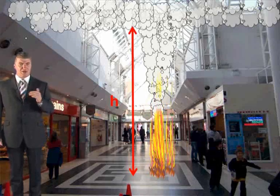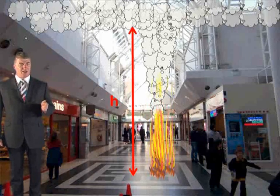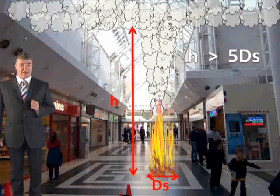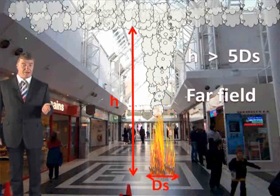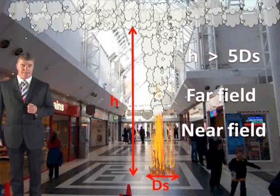First, we need to determine whether it's a near field or a far field model. The rule is that if the clear layer height is greater than the longest dimension of the source times 5, then it's a far field model. If not, it's a near field model.